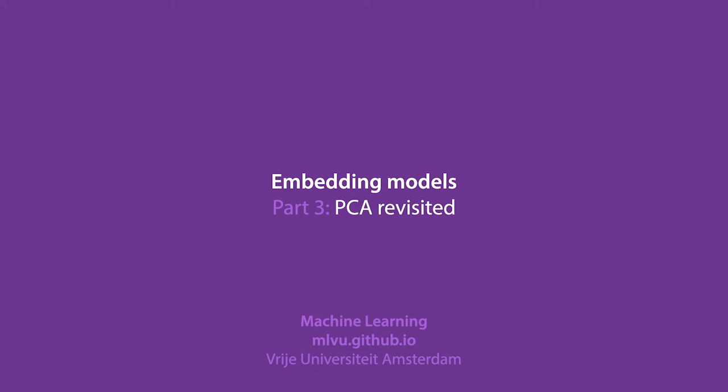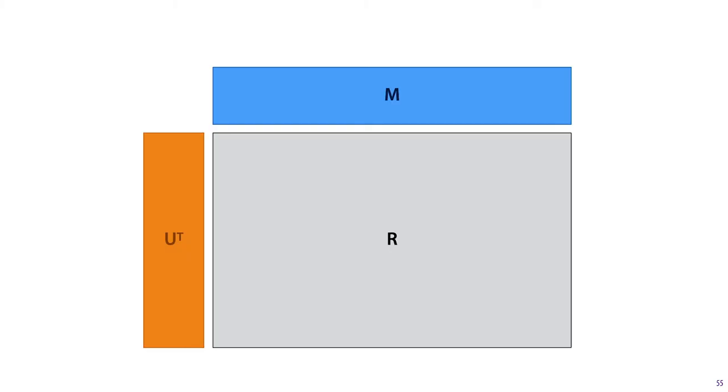In this video, we'll revisit principal component analysis and look at it from the perspective of matrix factorization. In the previous videos, we saw that we could get embeddings by thinking of our data as a big matrix and decomposing it into two matrices of embeddings.